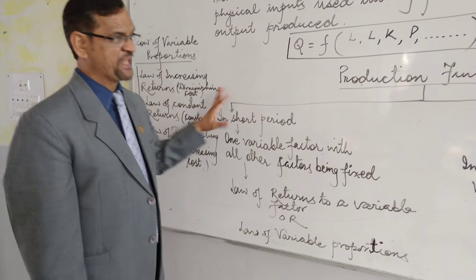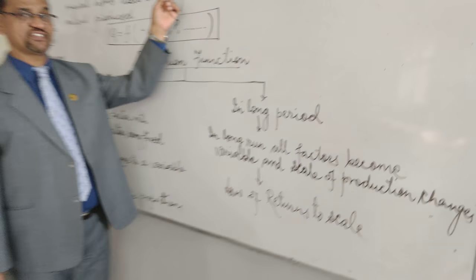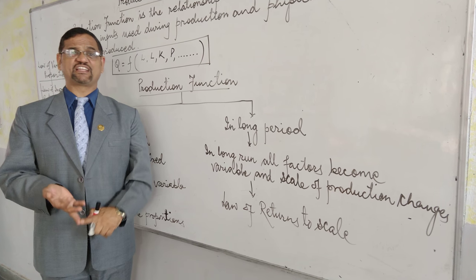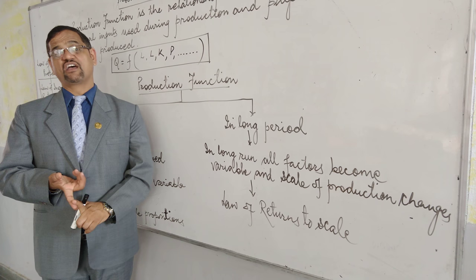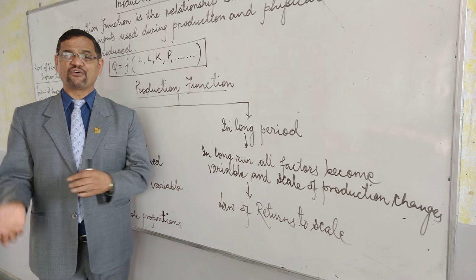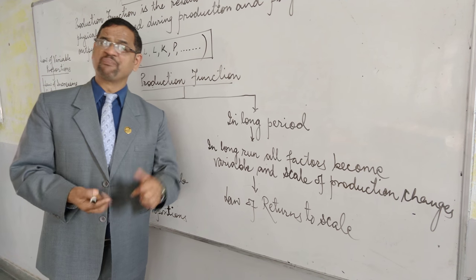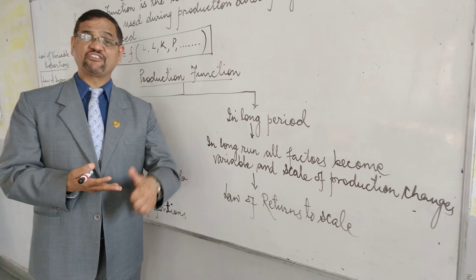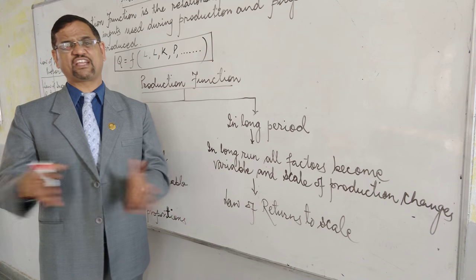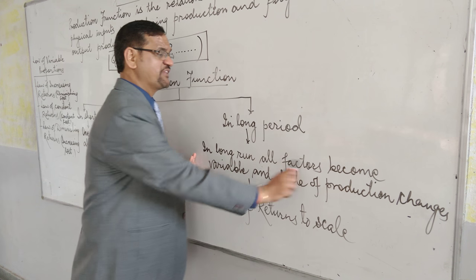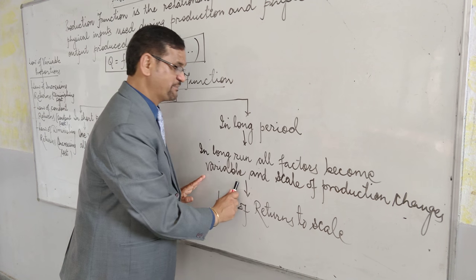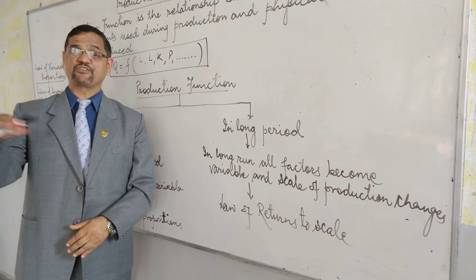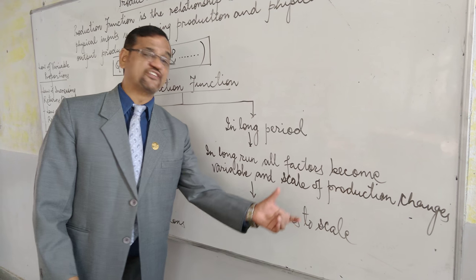In the long run, what happens 10 years from now: buildings will have to be changed, there will be changes in machinery, technology, and skilled and unskilled labour. All factors of production — land, labour, capital, entrepreneurship, electricity, generators — everything will be changing. So in the long run, nothing remains constant; all factors become variable and the complete scale of production changes — either going up, becoming constant, or coming down. We call these laws of returns to scale.